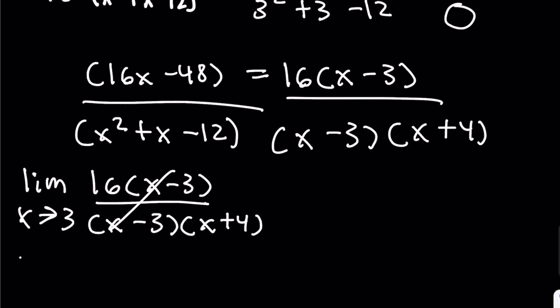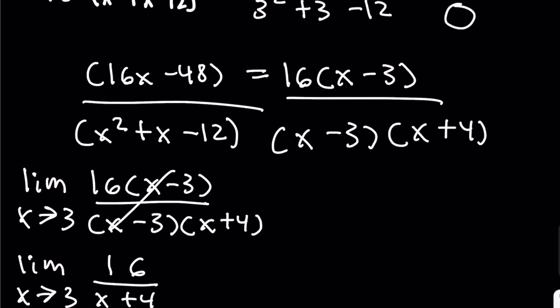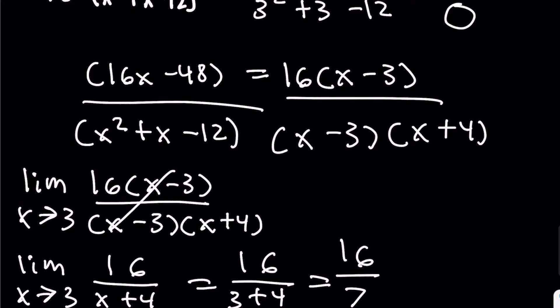We're left with the limit as x approaches 3 of 16 over x plus 4. Now we do direct substitution: 16 over 3 plus 4, and 3 plus 4 is 7. So the value of this limit is 16 over 7.